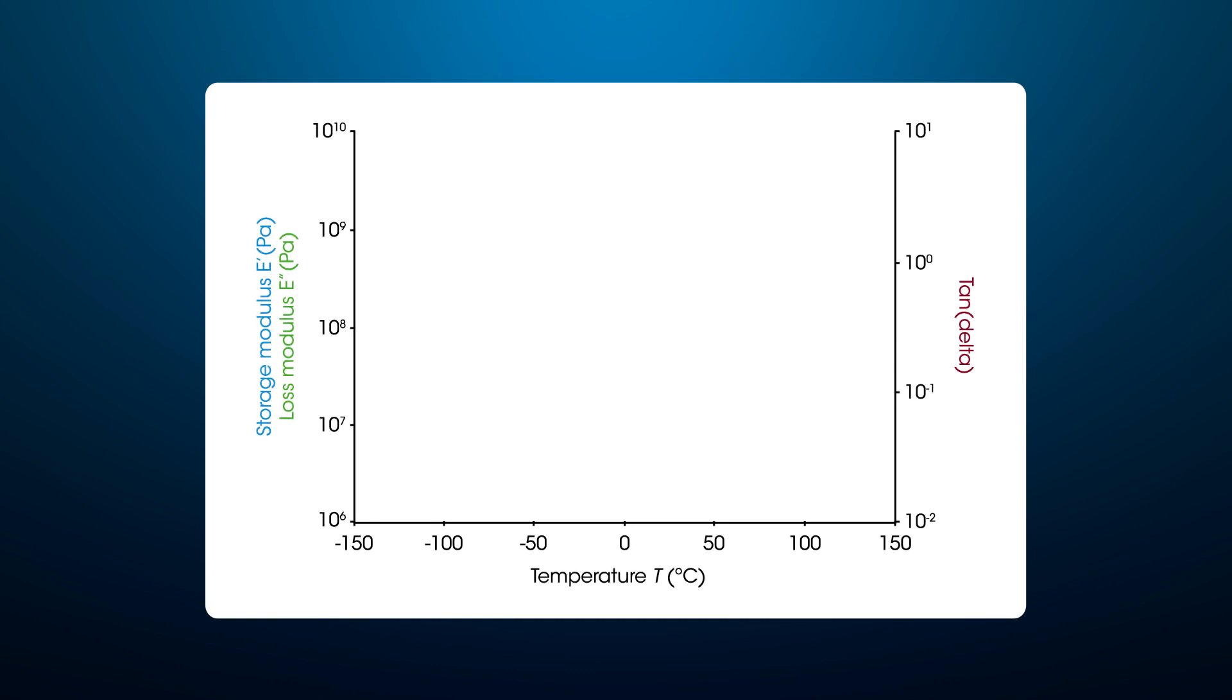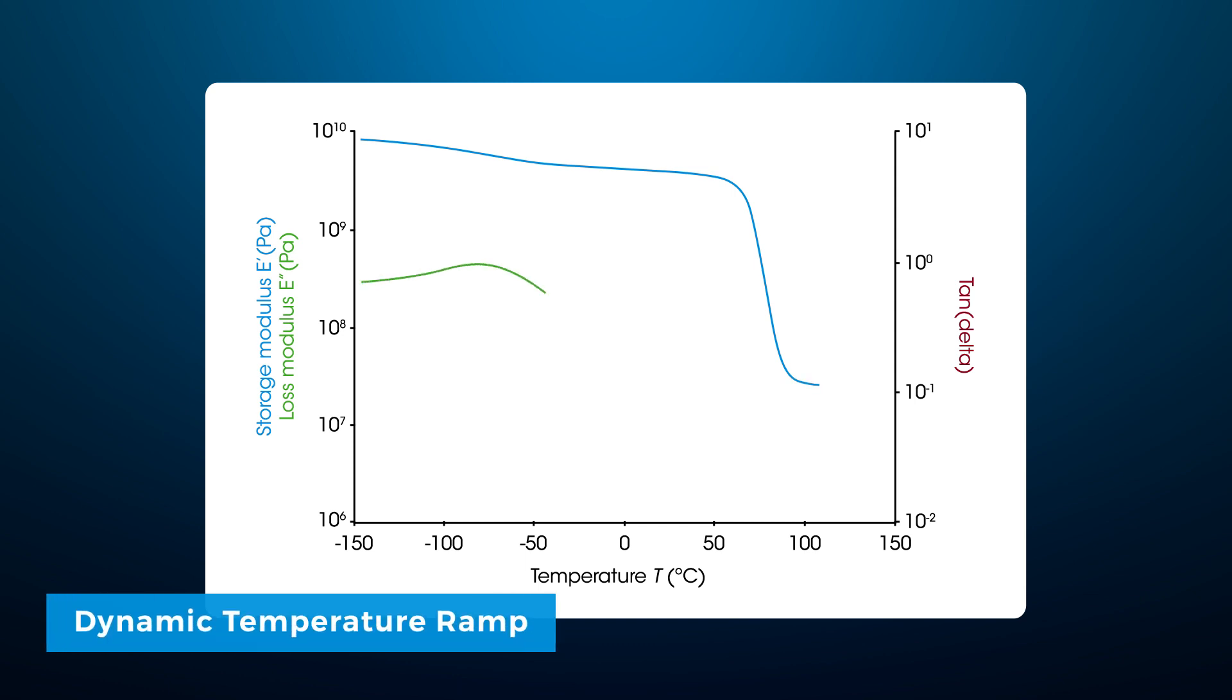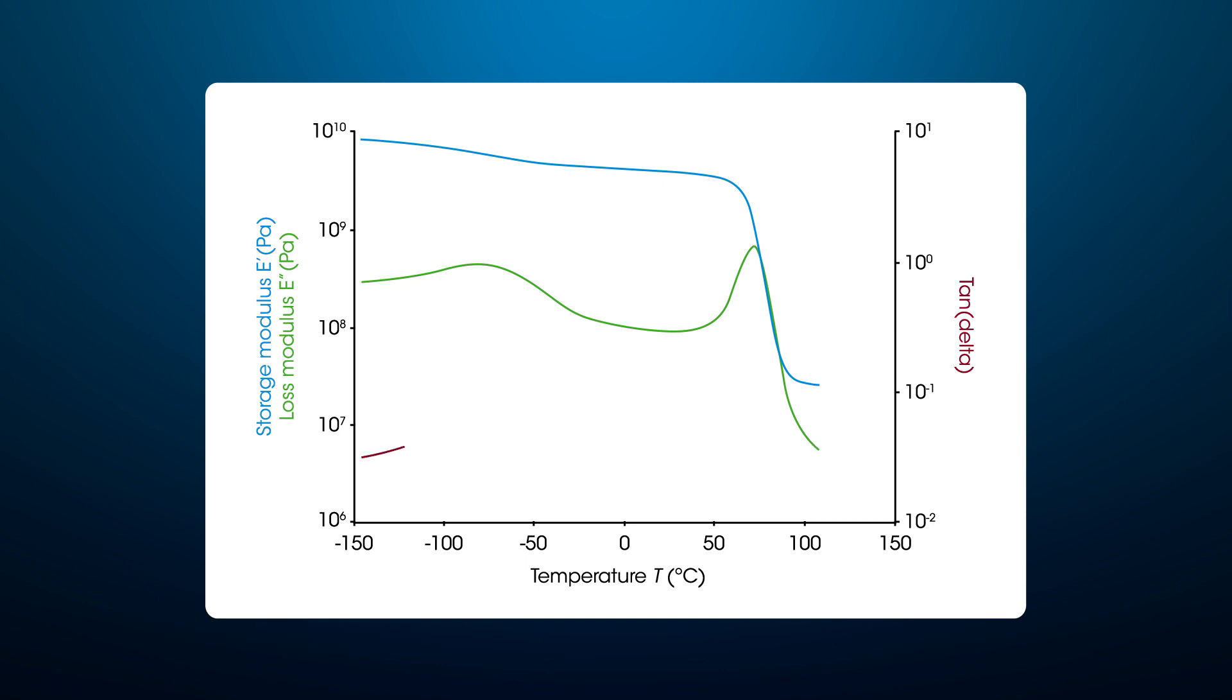When studying the viscoelastic properties of solid samples, one of the most common rheological test methods is the dynamic temperature ramp. In this test, sample moduli and damping factor are monitored as a function of temperature, and the glass transition and subambient transition temperatures are determined.